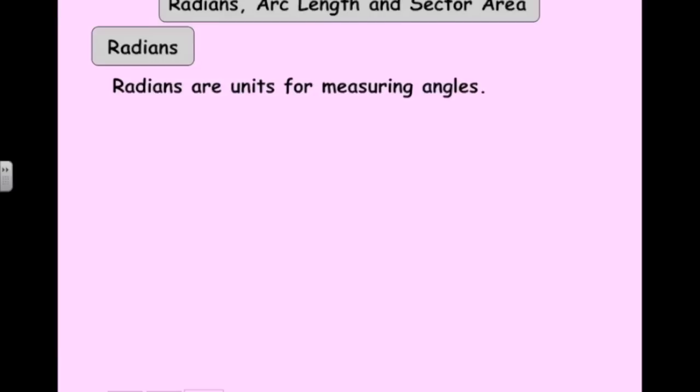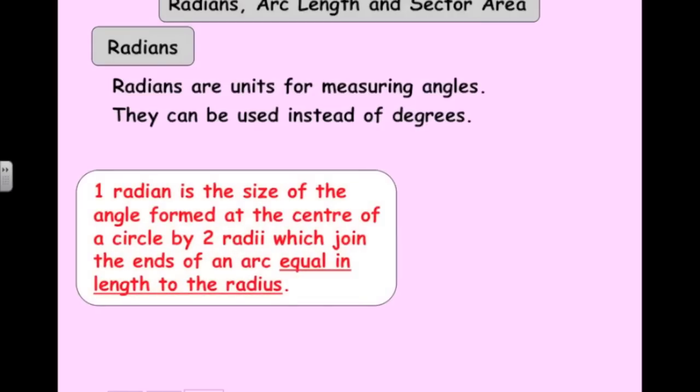A radian is a way of measuring angles. We're used to seeing degrees all the time. That's the way that we've measured angles until this day. So now we're going to look at a different way of measuring angles, which is radians. So here's the definition of a radian. One radian is the size of the angle formed at the center of the circle by two radii, which join the ends of an arc, equal in length to the radius.